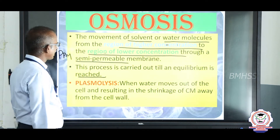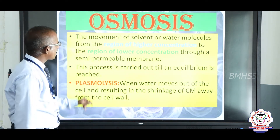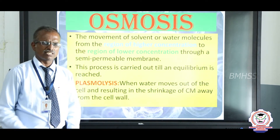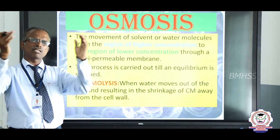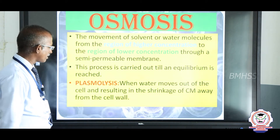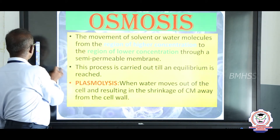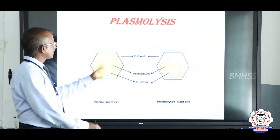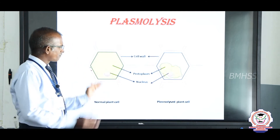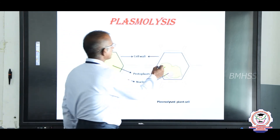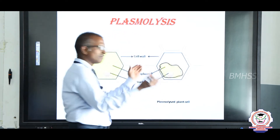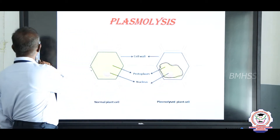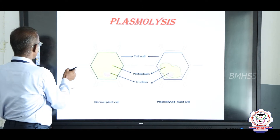What is plasmolysis? Plasmolysis occurs when water moves out of the cell. As a result of water coming out, the cell becomes shrunken — that is, shrinkage of the cell membrane away from the cell wall. This is called plasmolysis. Before plasmolysis, the cell is completely full of water. After water is removed, the cell becomes completely shrunken. So when water is removed, plasmolysis occurs in plant cells.